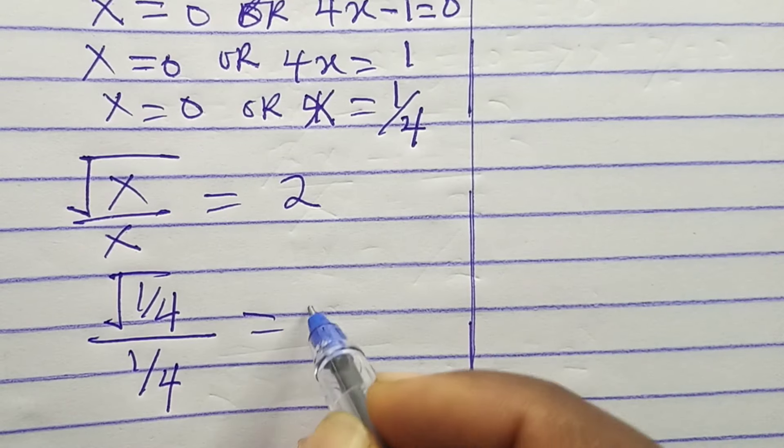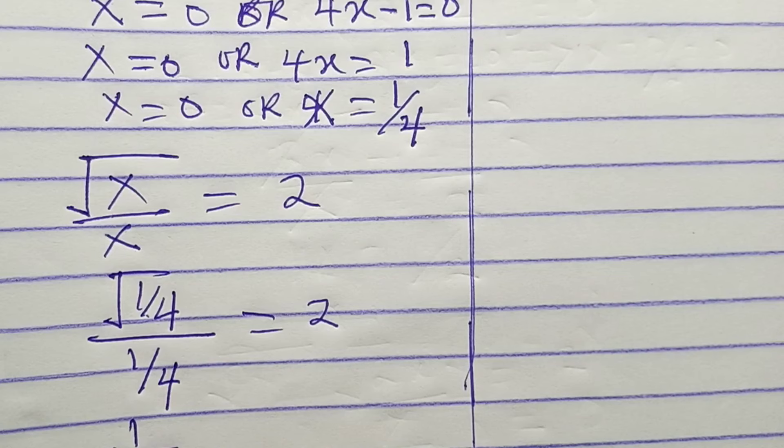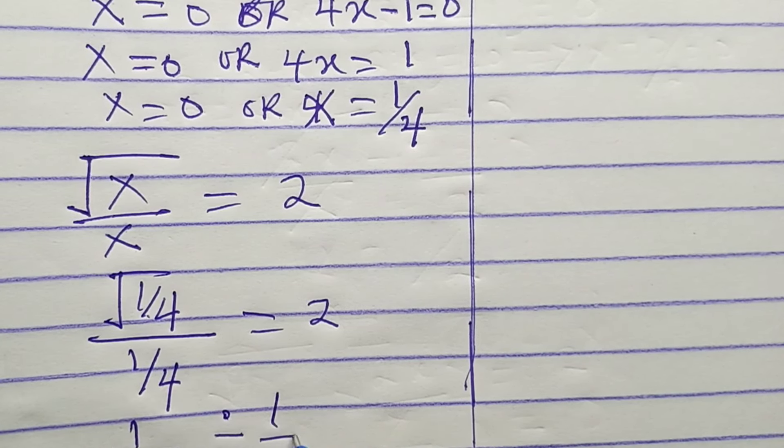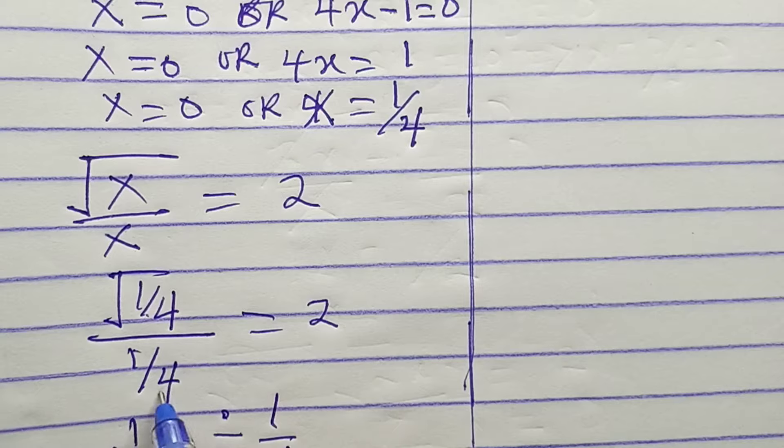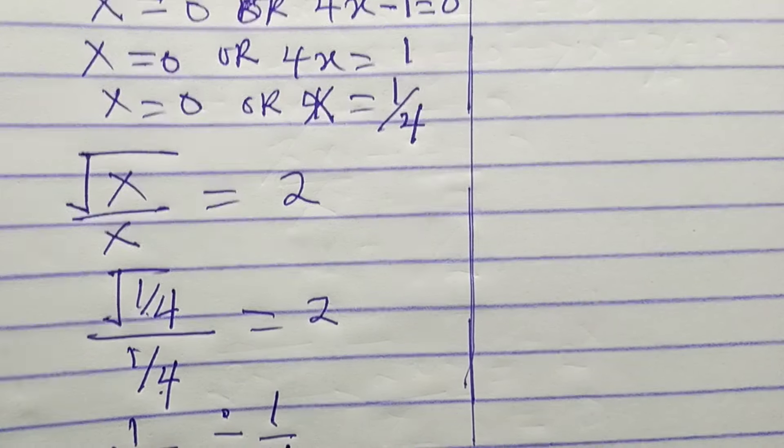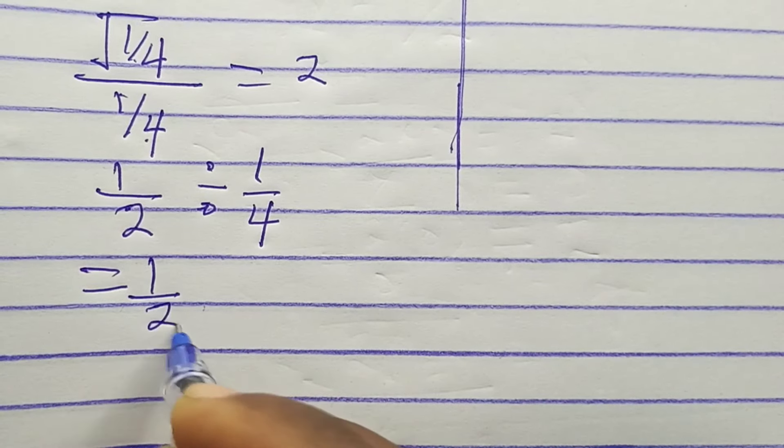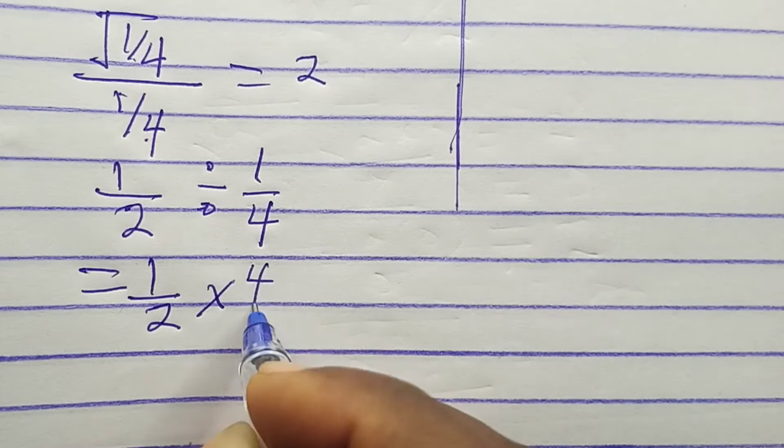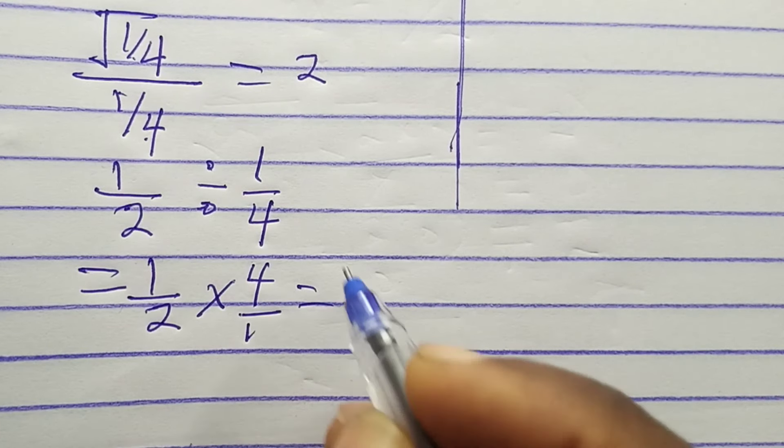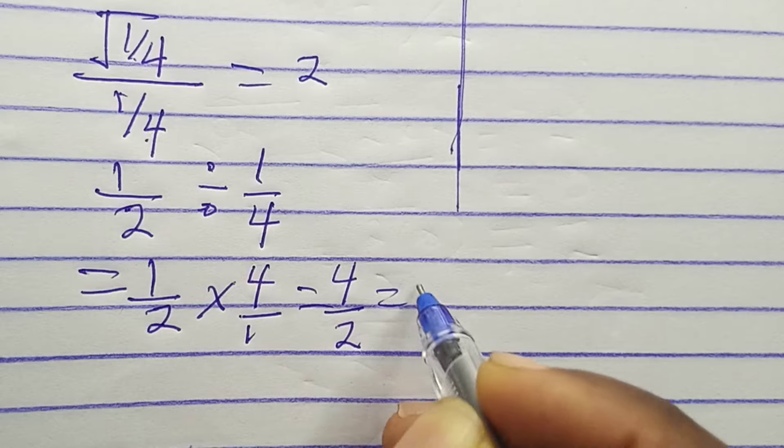Will it give us 2? Root 1 over 4 is 1 over 2, divided by 1 over 4, which equals 1 over 2 times 4 over 1, which equals 4 over 2, and the result is 2.